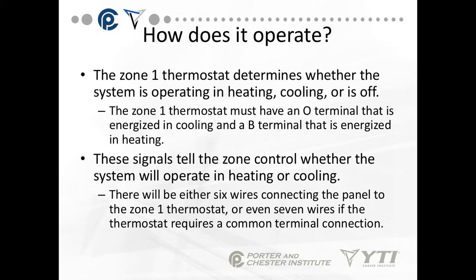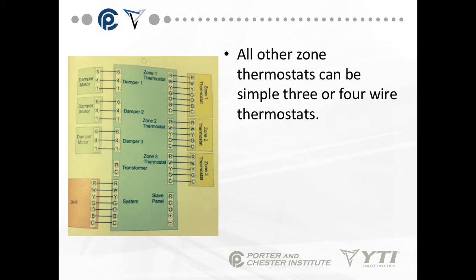There are either six wires connected to the panel by the Zone 1 thermostat, or seven wires if the thermostat requires a common terminal connection. Think about that when you're doing your wire sizing for a new installation. All other zone control thermostats can be simple three- or four-wire thermostats. Zone 2 and Zone 3 can be the simple thermostats, and can have a C terminal for digital thermostats that require a common.